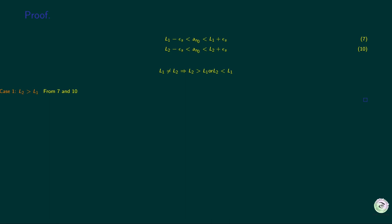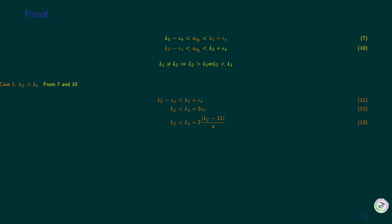Case 1: Let's assume that l2 is greater than l1. Combining inequalities 7 and 10 gives 11. Moving epsilon to the right, we get 12. Plugging in for epsilon gives 13. In this case, l2 is bigger than l1, we drop the absolute value at 14. Further simplifications give us 15. Again using the case 1 assumption, l2 is greater than l1, we can get to 17, which says l2 is greater than itself. Case 1 leads to a contradiction.